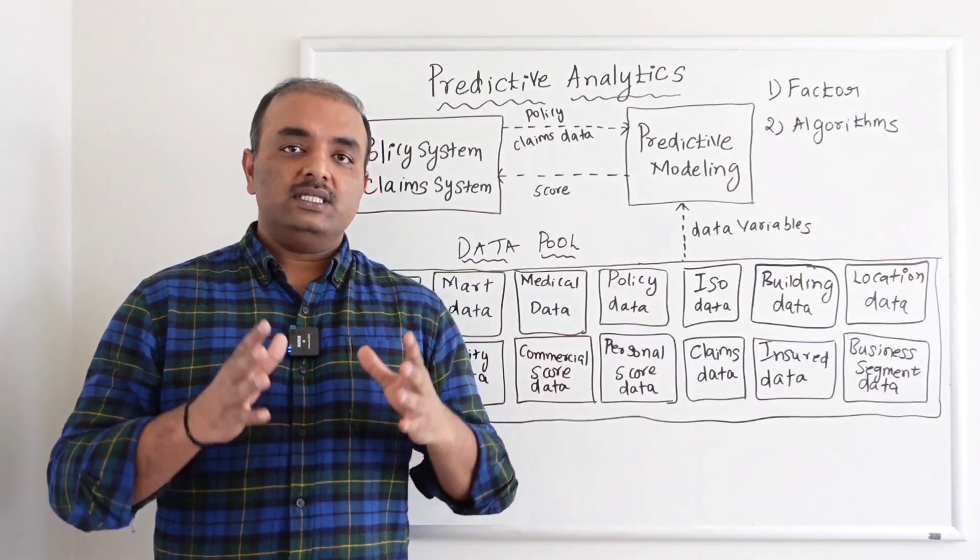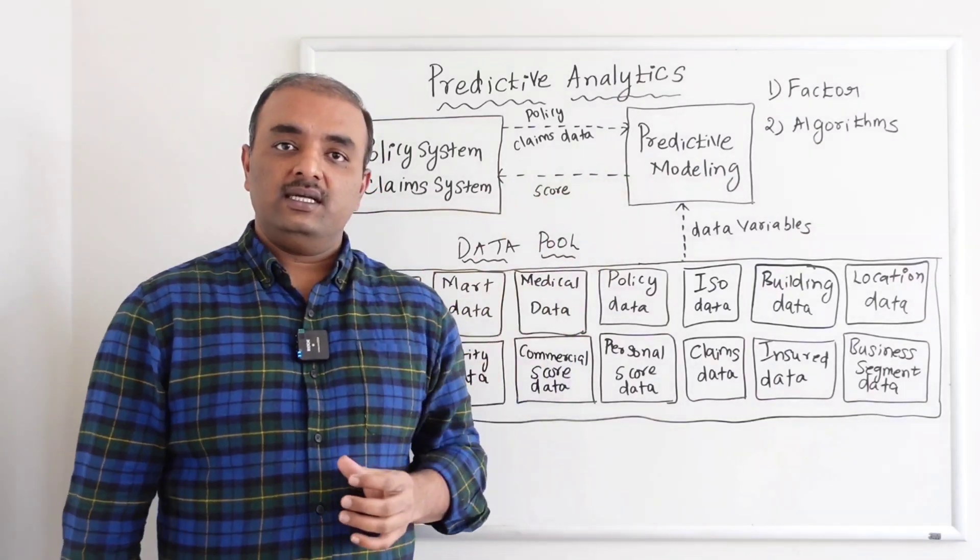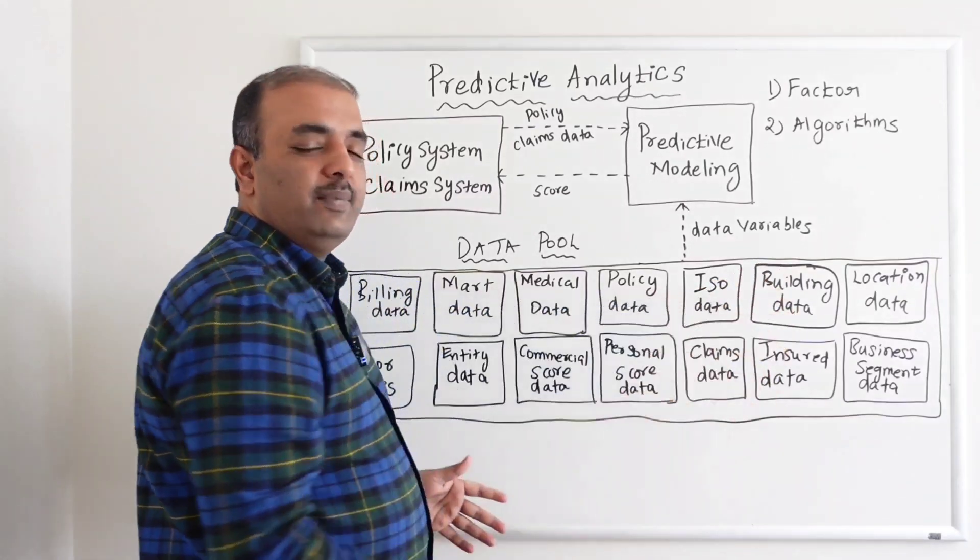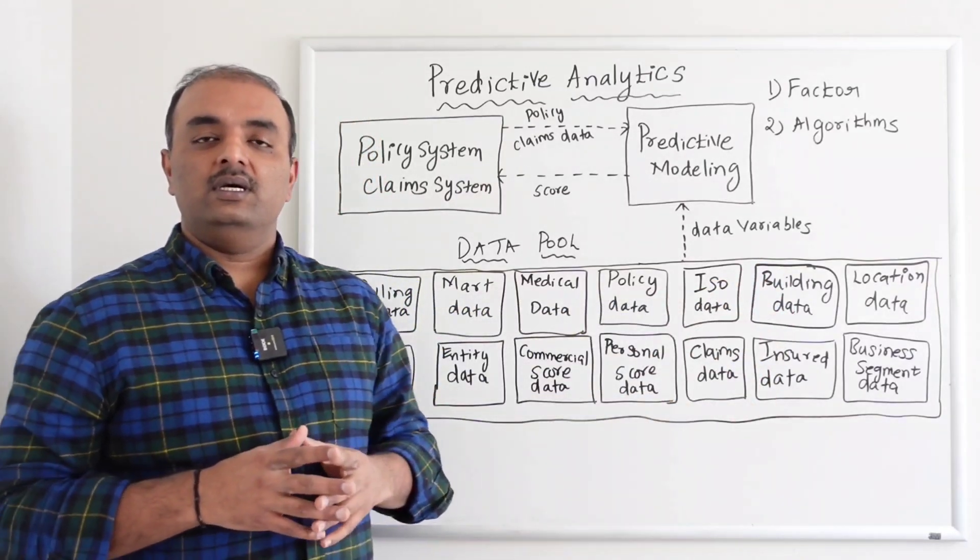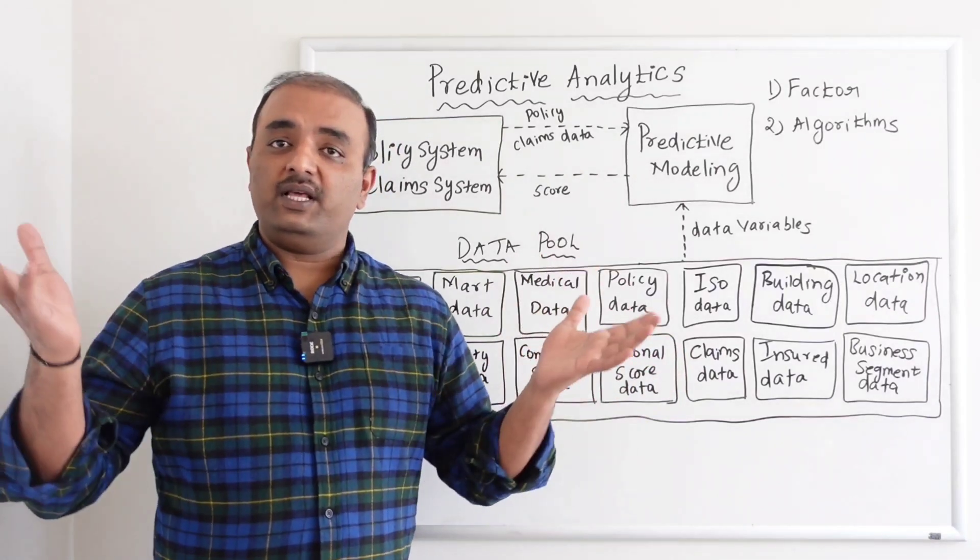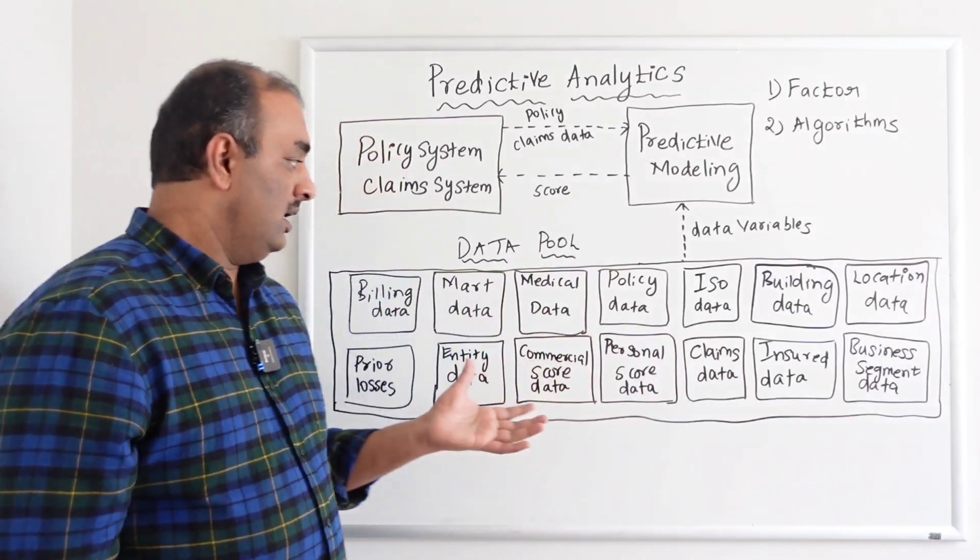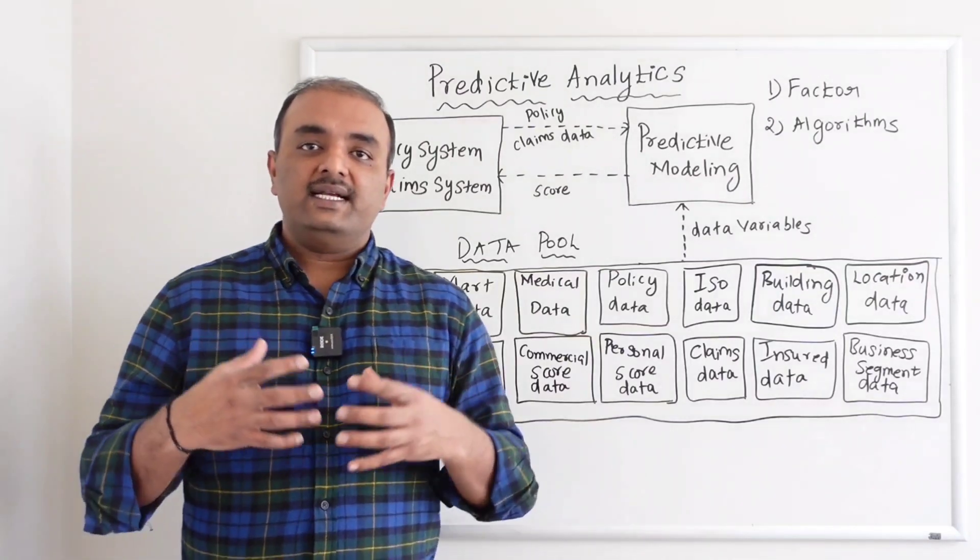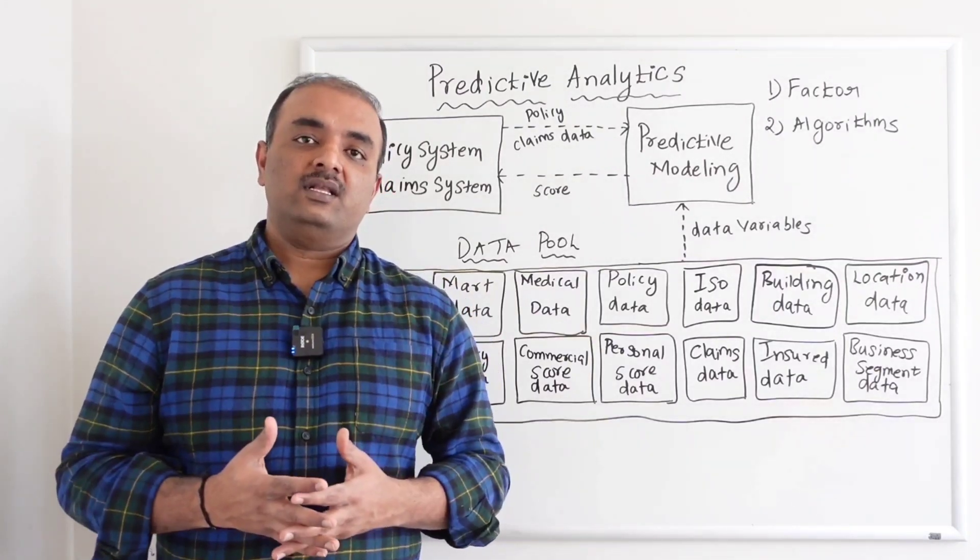In turn, what this predictive modeling system does is it goes to multiple sources of data. This is a sample - a very generic sample. It can go to at least 100 plus applications with so many variables and then pull the data. Once they have the data, they will analyze the data.